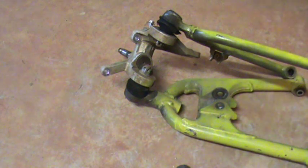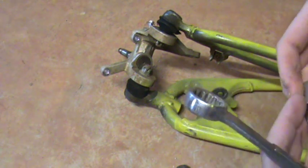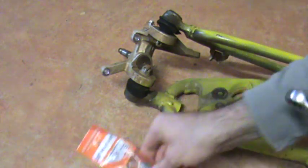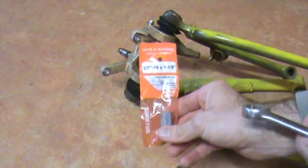This is a video about a real quick way to pop apart ATV ball joints. This is a real simple tool you make from stuff you can get at the hardware store.